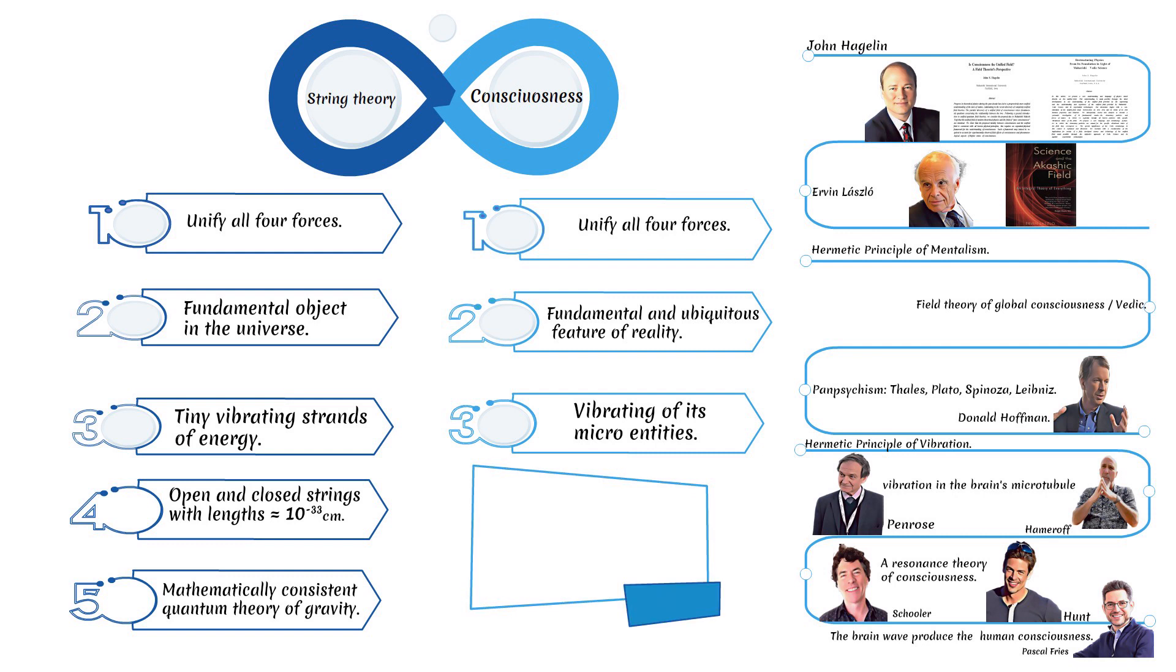In summary, the three points on the string theory side resemble those on the consciousness side. Based on these similarities, we may conclude that the fundamental object of consciousness will likely be open and closed strings at Planck lengths of 10 to the minus 35 meters. So what about the fifth aspect? String theory is the only known mathematically consistent quantum theory of gravity. Regardless of the experimental proof obstacle of string theory, in the following flow we take a bizarre approach to explore if there is a correlation between open and closed strings and mathematics.